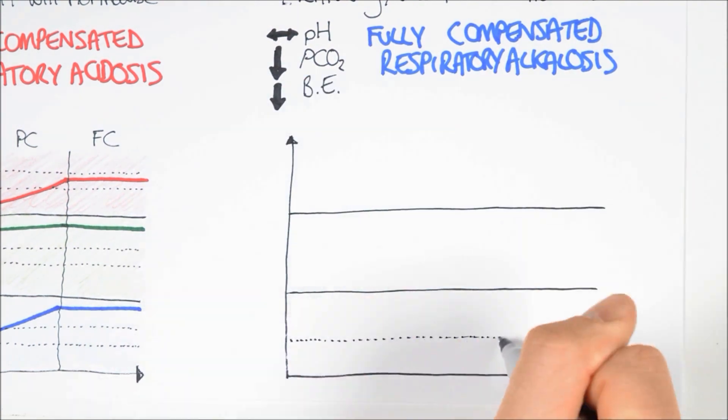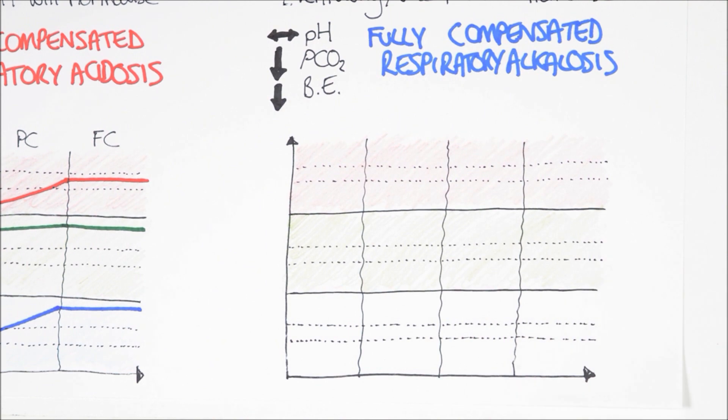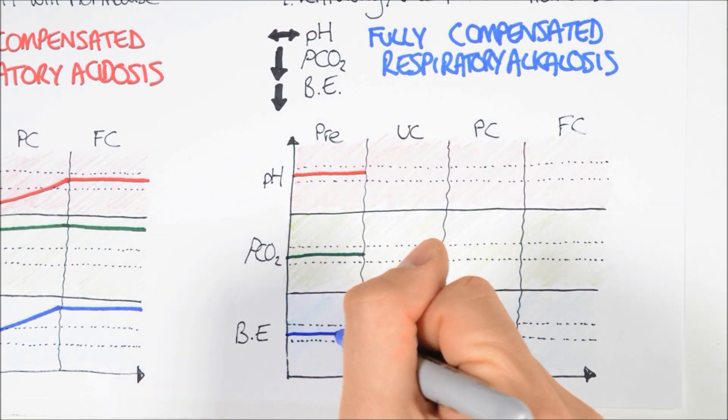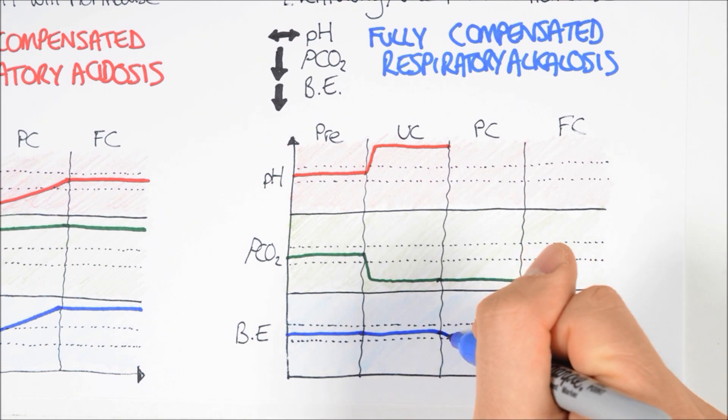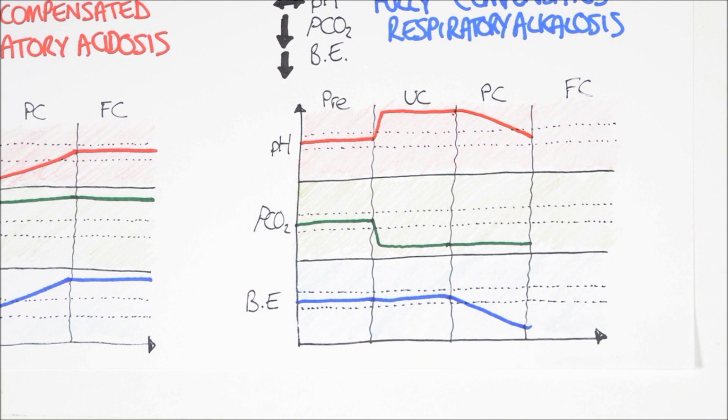As before, we can track these changes on a time plot. Pre-disturbance, all variables are within normal range. The hyperventilation triggers a decrease in arterial PCO2 and a rapid increase in pH with no change in base excess. Once the renal compensation kicks in, the base excess will start to fall, causing pH to return towards normal. But PCO2 is still unchanged.